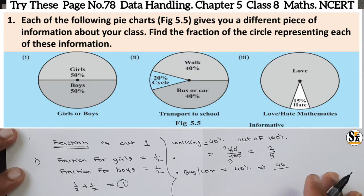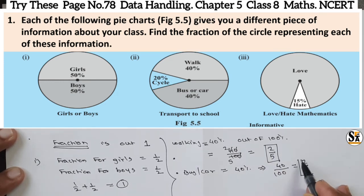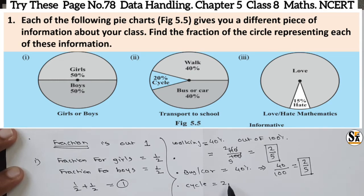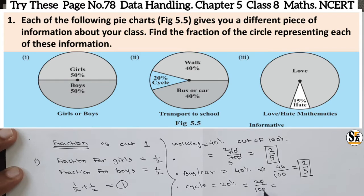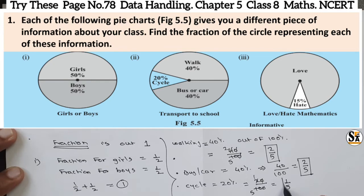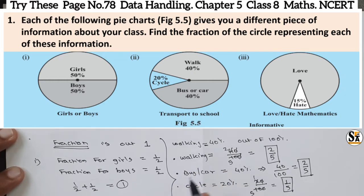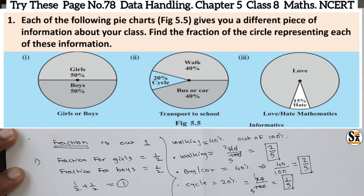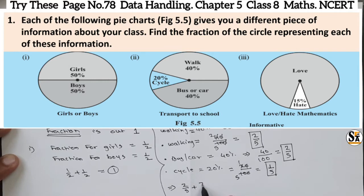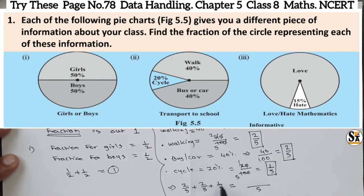So the fraction for walking is 2/5, and the fraction for bus and car is 2/5. For cycle, 20% is given, so the fraction is 20 divided by 100, which simplifies to 1/5. If we add all three fractions: 2/5 plus 2/5 plus 1/5, we get 5/5, which equals 1. So the condition is satisfied.